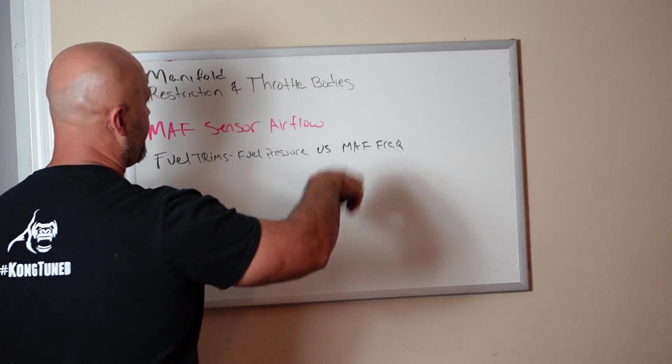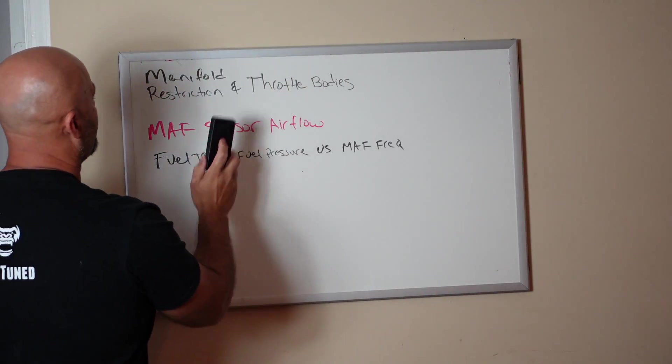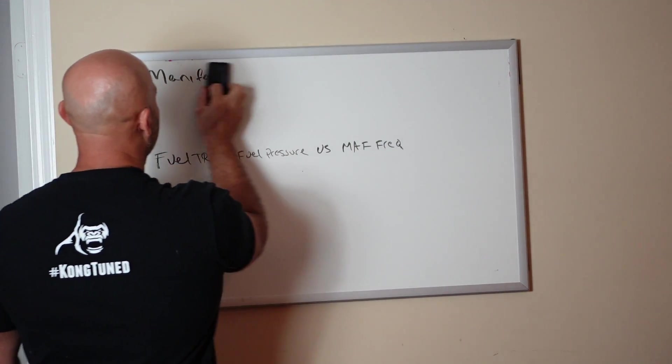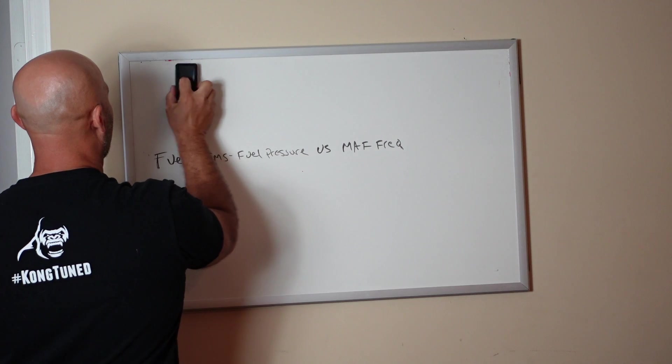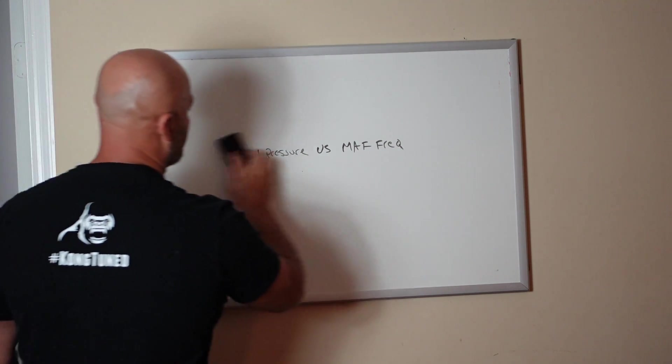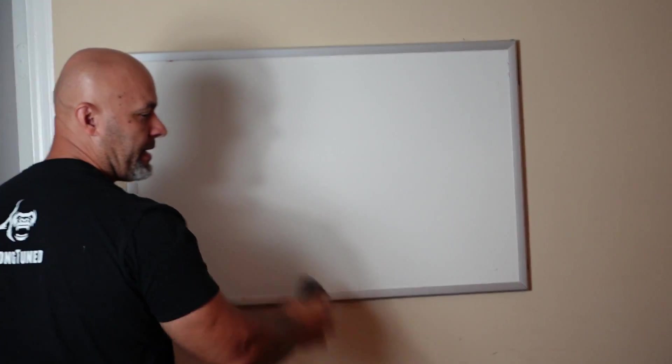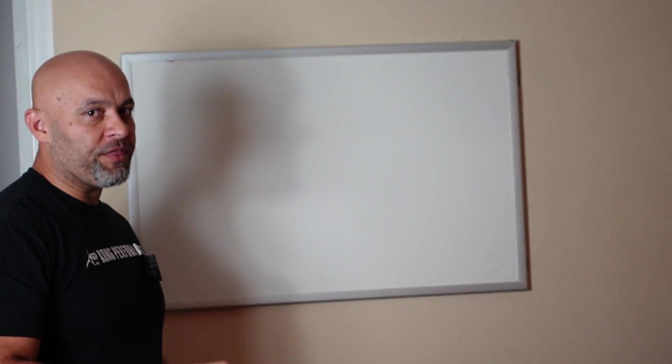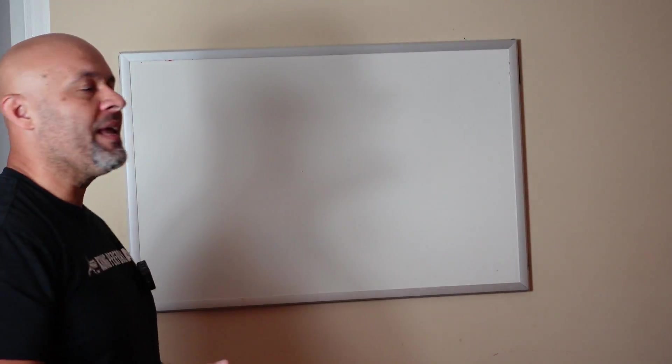This is what's going to be the next couple things: manifold restriction and throttle bodies. Fuel trims today. Let's talk about short-term fuel trims. We're talking about all generations Coyotes, what the difference is, how to read it in a data log. Very generic, very simple terms, nothing way into the weeds.